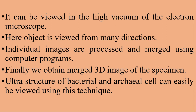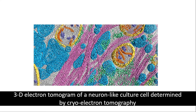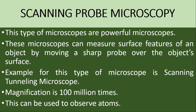Individual images are processed and merged using computer programs, and finally we obtain a merged 3D image of the specimen. The ultrastructure of bacterial and archaeal cells can easily be viewed using this technique. This is a 3D electron tomogram of a neuron-like culture cell determined by cryo-electron tomography.